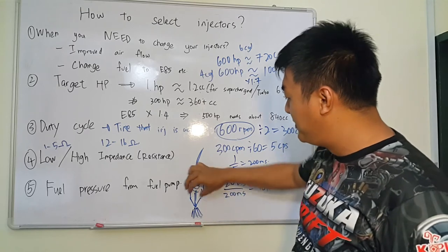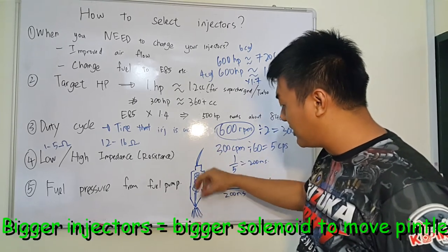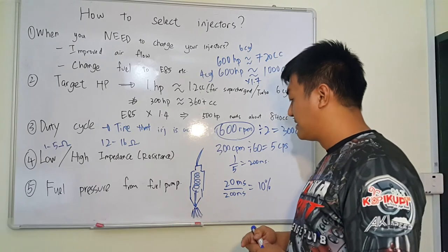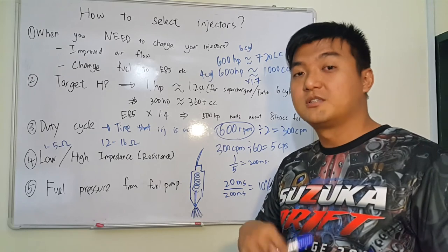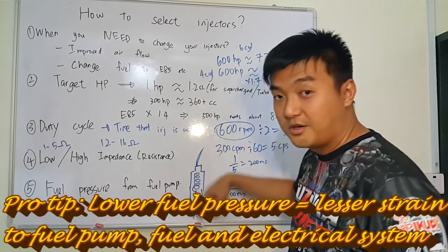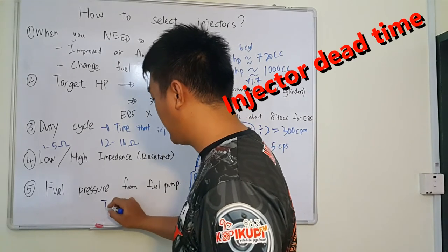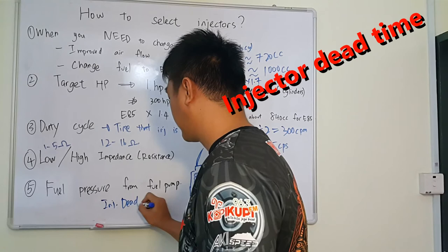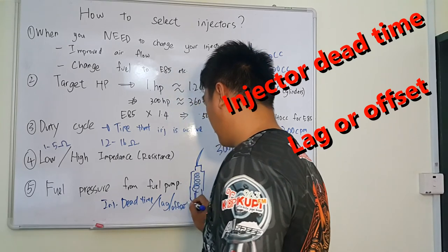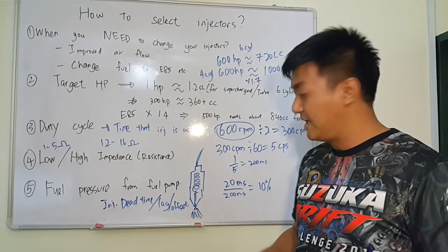Also, if we are using bigger fuel injectors, the solenoid is bigger and stronger in order to overcome the fuel pressure from the fuel pump, so the fuel pump doesn't need to run at very high pressure levels. If you increase the fuel pump to very high pressure, the solenoid requires more time to overcome that pressure and let fuel flow through. This extra time is what we sometimes call lag or offset — meaning the injector has to open up earlier than it normally should.